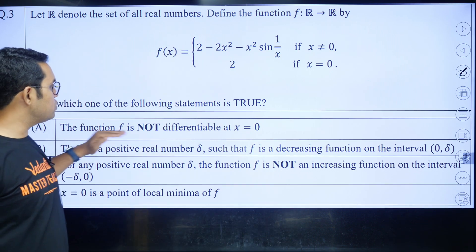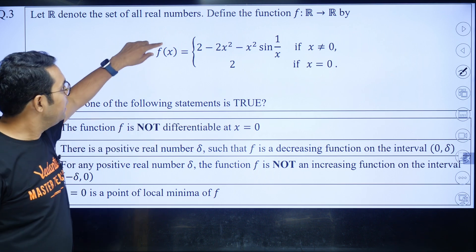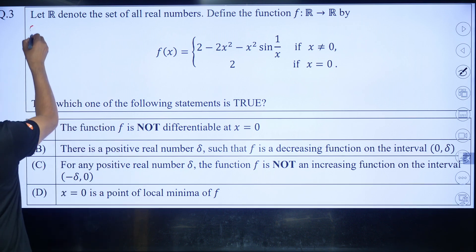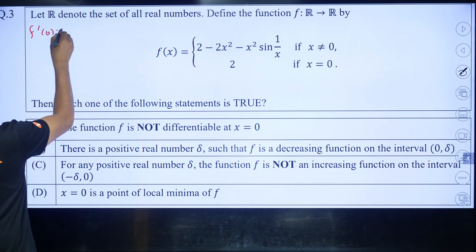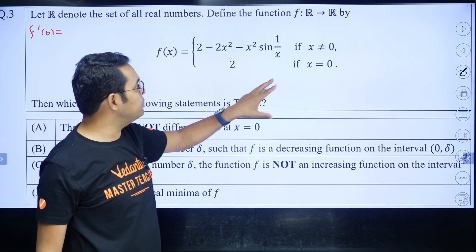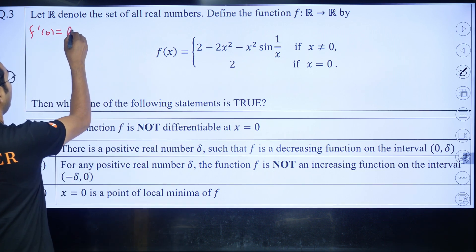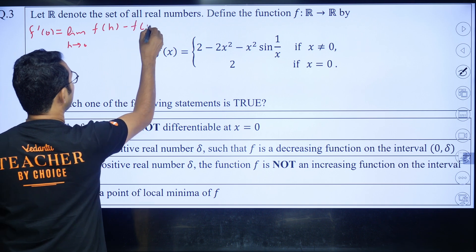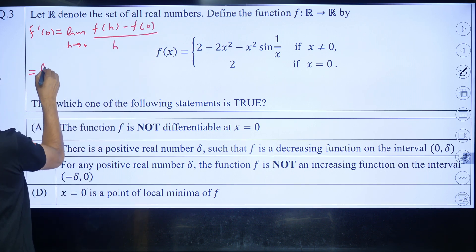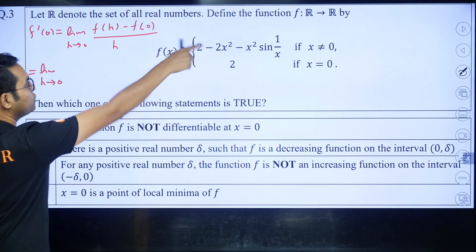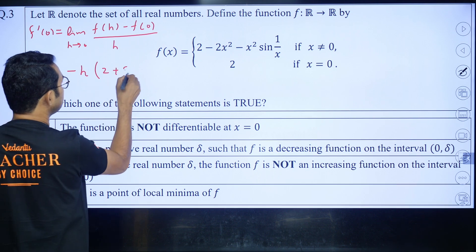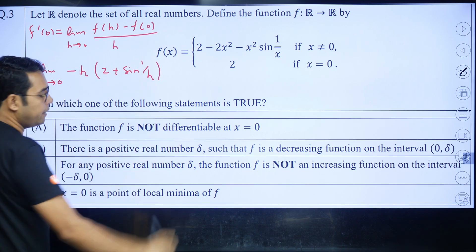Here, the first option is that the function is not differentiable at x = 0. The function is continuous at 0, you can check. And you can very easily find f'(0) by first principle. For such functions, we have to do it by first principle only. So it will be limit h → 0 of [f(0+h) - f(0)]/h. This becomes limit h → 0, the 2 will get cancelled, one h will also cancel that h, so we will be getting -h(2 + sin(1/h)). You can check this calculation.